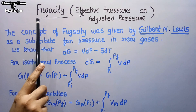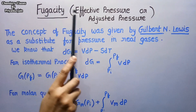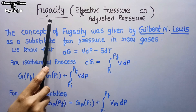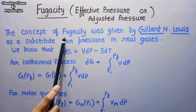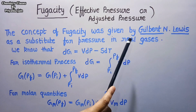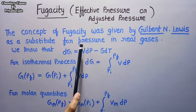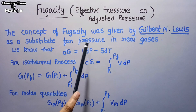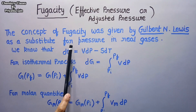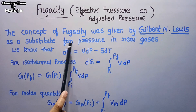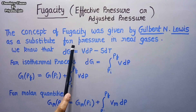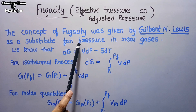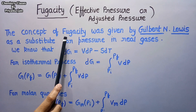Fugacity is a very simple term. It is the effective pressure, or we can say it is the adjusted pressure, and it is used in the case of real gases. The concept of fugacity was given by the scientist Gilbert Lewis, and it is given as a substitute for pressure in real gases. In the case of ideal gases the pressure is the same as given in the ideal gas equation, but in the case of real gases there are several forces of attraction and repulsion, so the pressure is somewhat less or more. Instead of this we use the term fugacity, that is effective pressure.